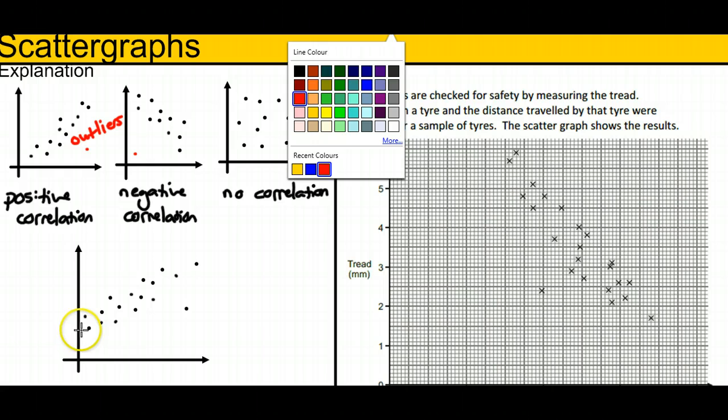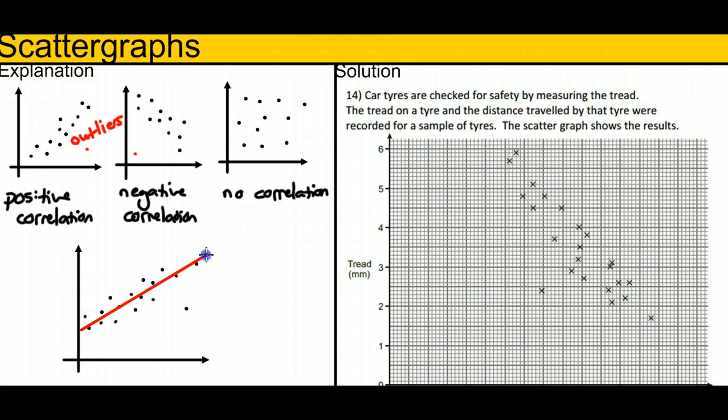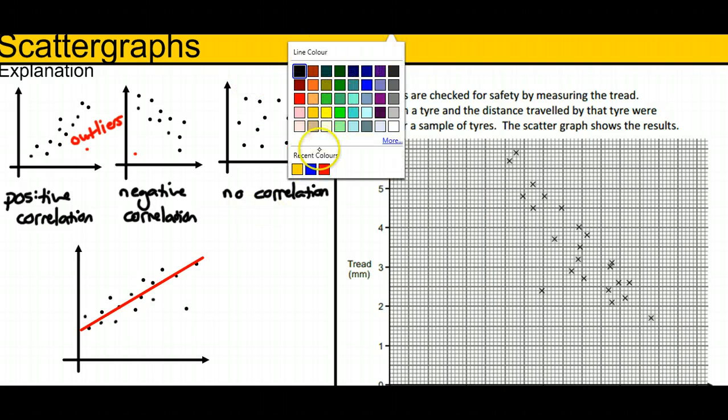If I put a line of best fit, I generally want it to follow the trend of the line, and I want to have more or less the same amount of points on either side and none of them too exceptionally far away. But you'll see I'm not letting this outlier here affect my line, in some sense assuming it doesn't quite have as much influence on the data or it is indeed an outlier. Once I've got my line of best fit, what you can then use the line of best fit for is finding information from it.